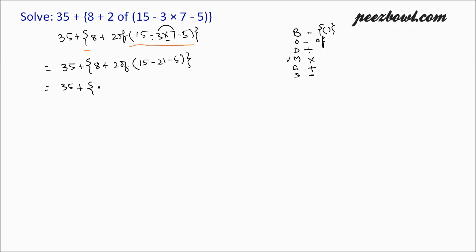Now we have 35 plus 8 plus 2 of — inside we have subtraction at both places. So the operation will go from left to right; the leftmost part will be performed first, moving towards the right. In this example, we need to work on 15 minus 21 first, and then subtract 5 from that result.